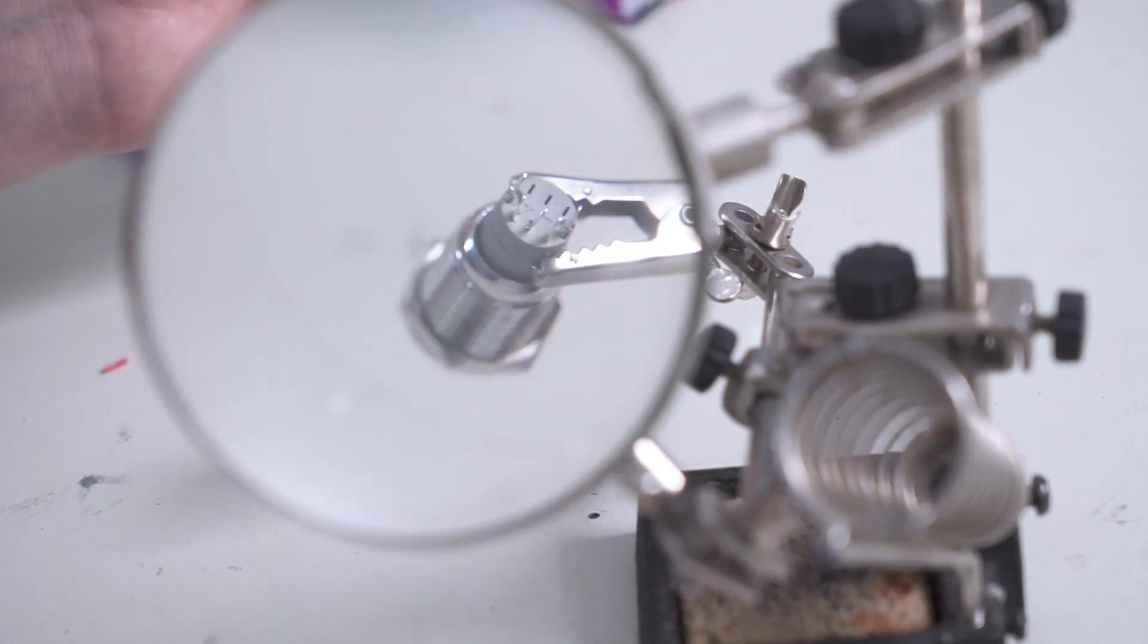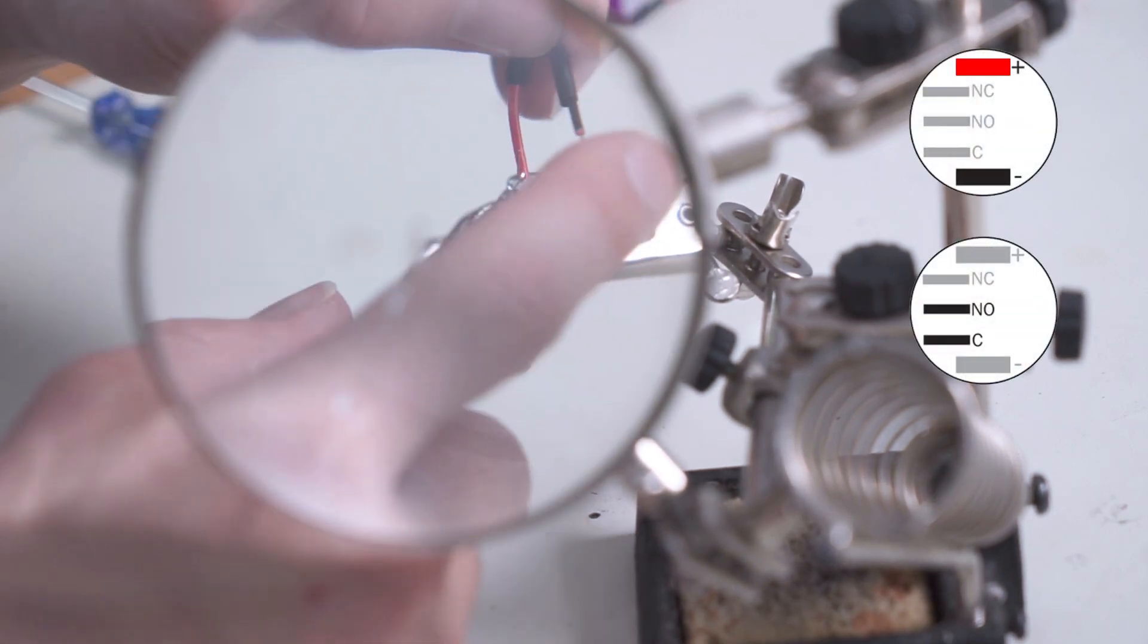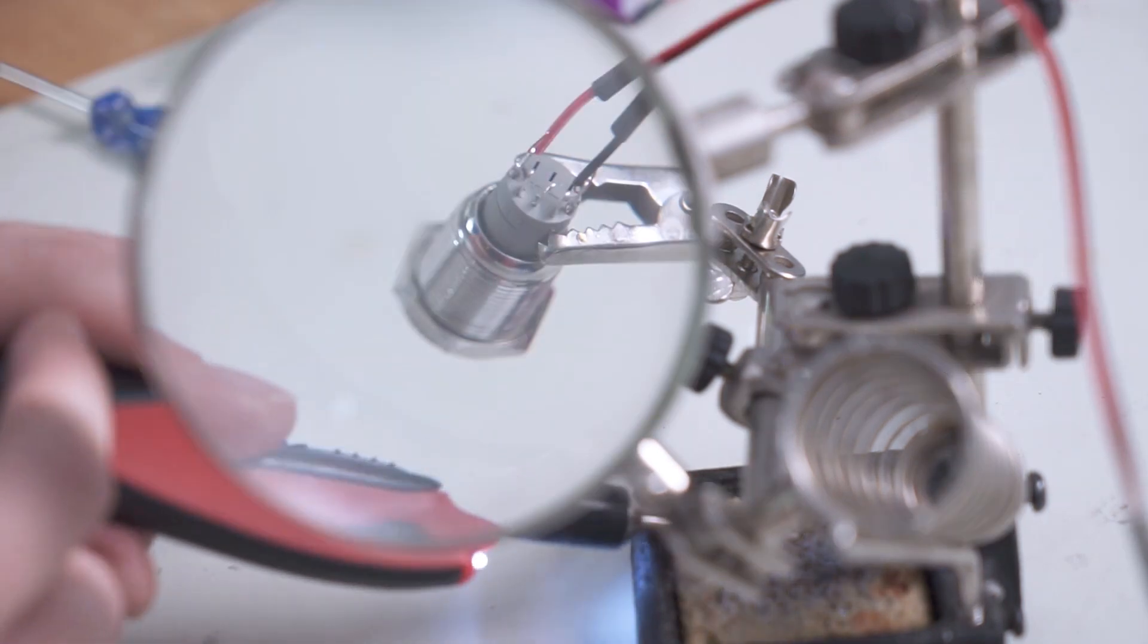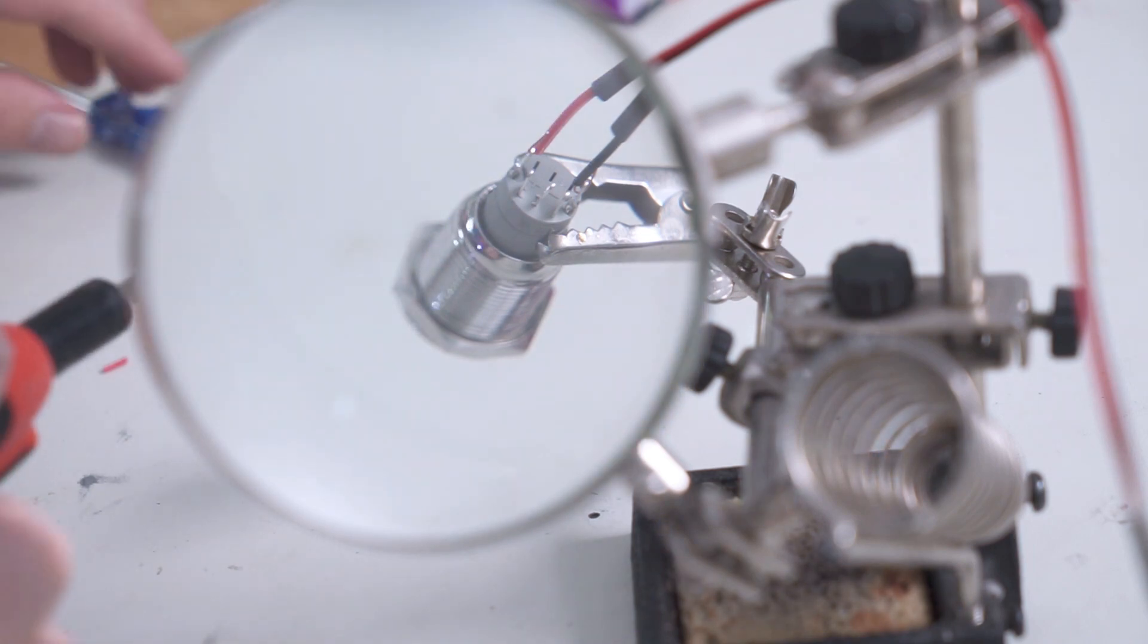When you're wiring stuff up, use best practice. Red is generally used for positive terminals, and black is usually used for ground. If you're using the power LED header on the motherboard or the HDD LED header, you don't need to worry about polarity. It's going to complete the circuit either way, but again, use best practice.